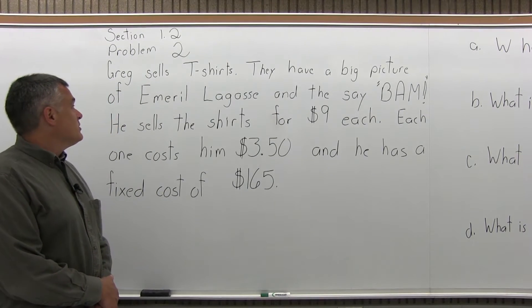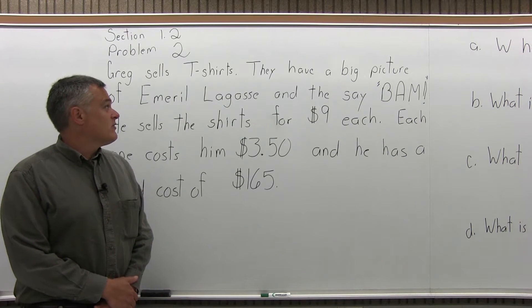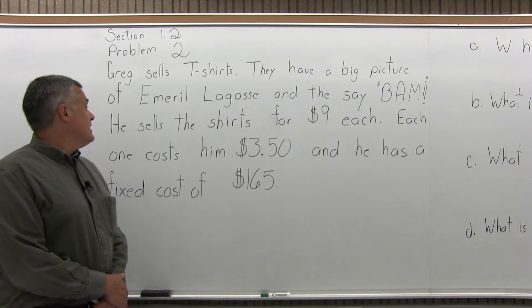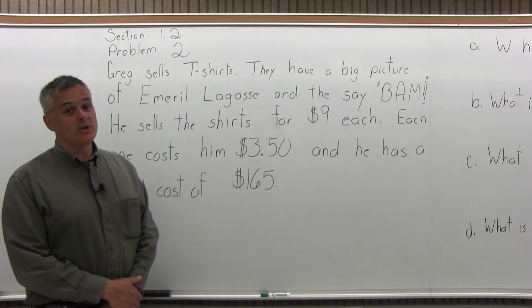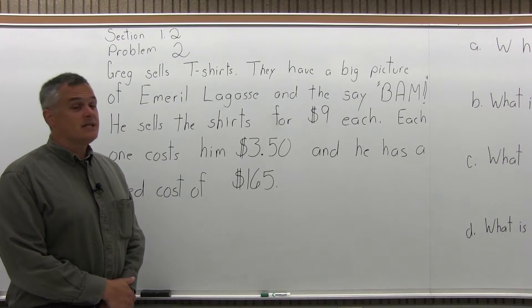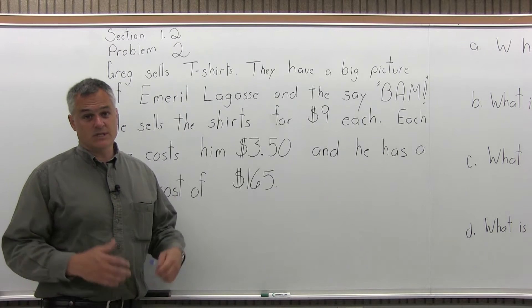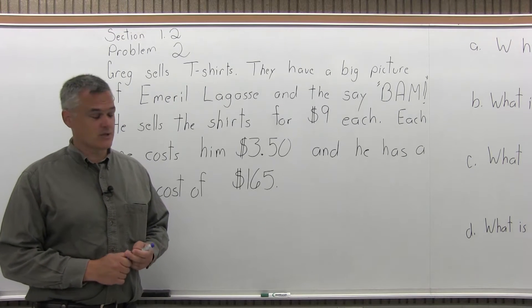This is problem number 2 from Section 1.2. It says Greg sells t-shirts. They have a big picture of Emeril Lagasse and they say BAM. He sells the shirts for $9 each. Each one costs him $3.50 and he has a fixed cost of $165. So in other words, it's $165 to stay in business even if he doesn't sell any shirts. That's the fixed cost.